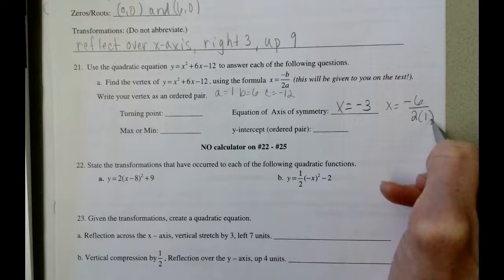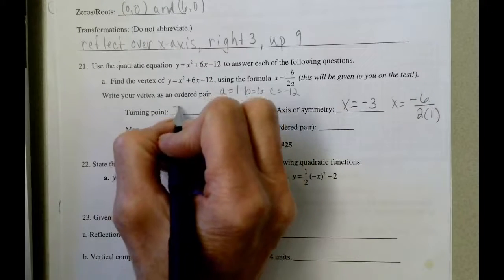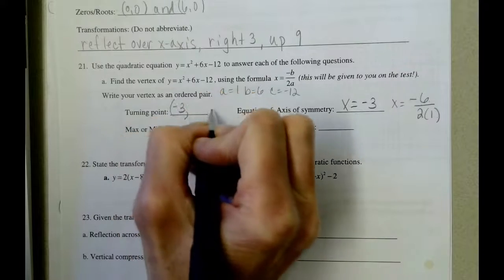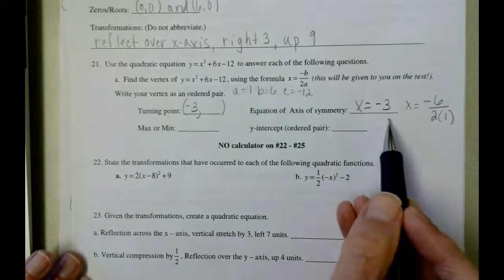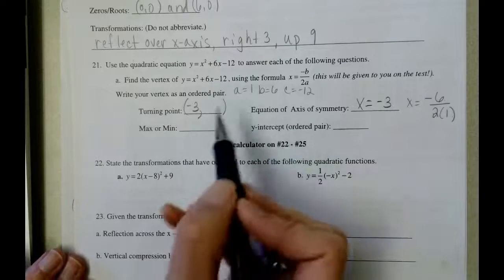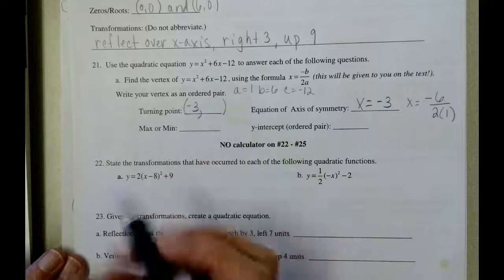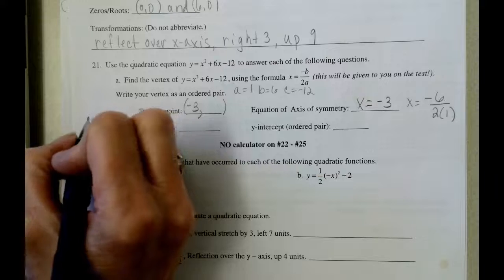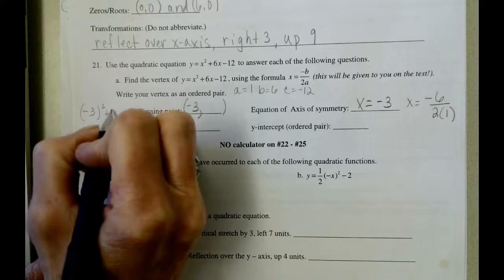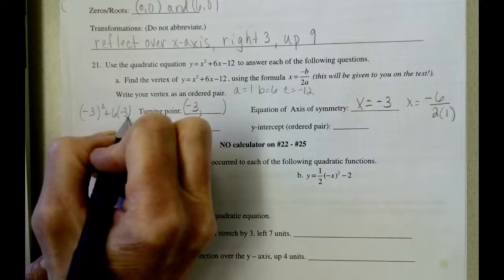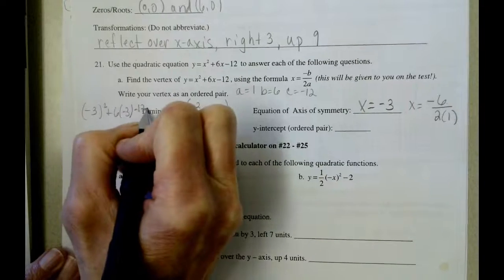So what happens then is that negative 3 is going to be the x value of our turning point, and we're going to take that value of negative 3, we're going to put it back into this equation wherever we see x. So it's going to be negative 3 squared plus 6 times negative 3 minus 12.